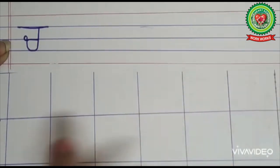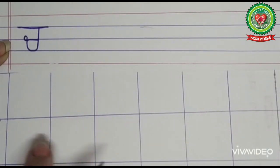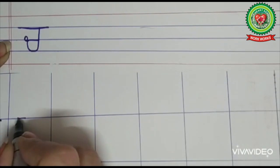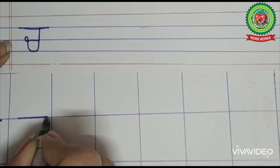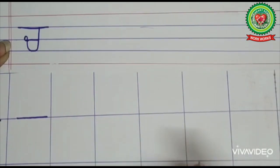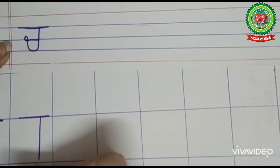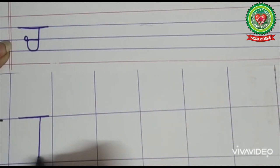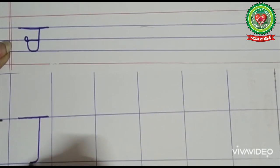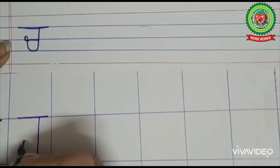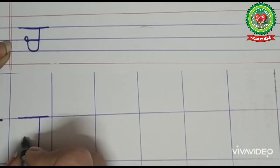Today I will teach you how to write Chacha in a square box. Our first step is to draw a small sleeping line like this, and then we will draw a standing line. From the edge of this standing line we will draw a curved line like this.